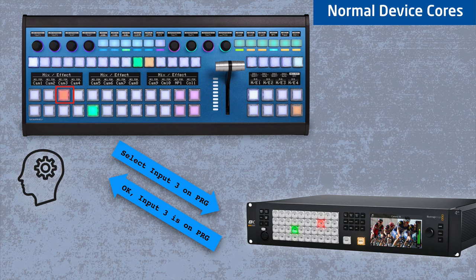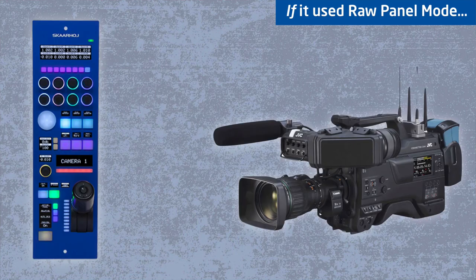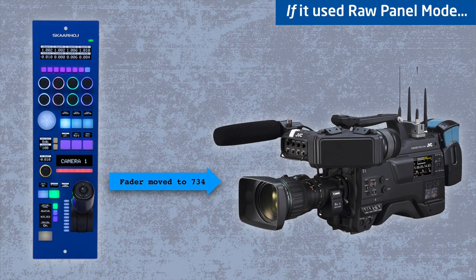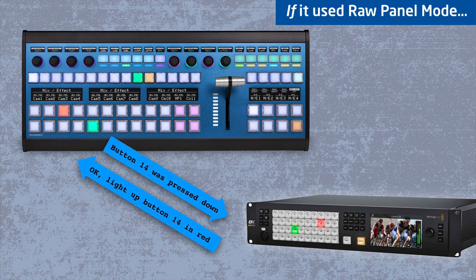If we take RAW Panel instead, and if a camera could talk RAW Panel, it would rather receive a message from the RCP like 'the fader has moved to position 734,' and then the camera would translate this value into an f-stop on the lens, returning a label like 'f8.0' to be written in the display on the RCP. Likewise, a vision mixing system could receive a message that a given button was pressed and would itself decide how to respond, like highlighting a button in red.